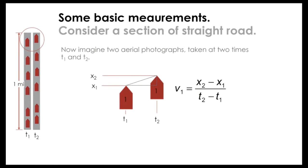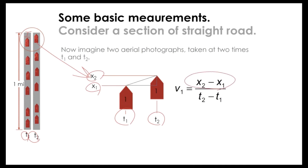Now imagine two aerial photographs taken at times T1 and T2. From the sky, you take one snapshot at T1 and another at T2. You can see each vehicle has moved slightly. To calculate space mean speed: vehicle one was at location X1 at time T1 and at location X2 at time T2. Speed is simply (X2 − X1) divided by the time difference between the two photographs.